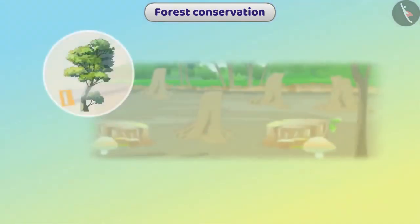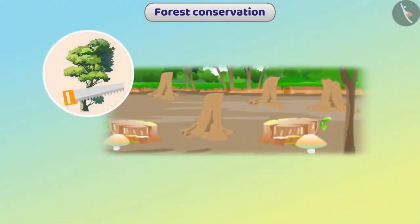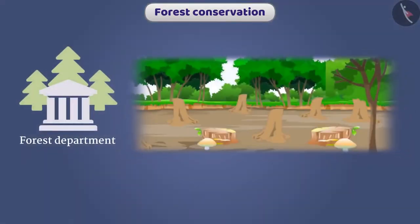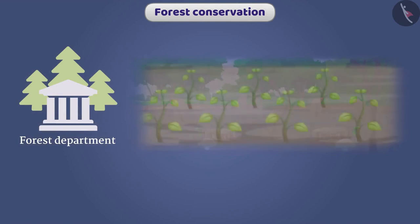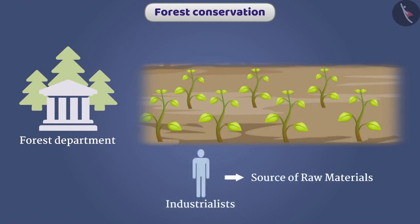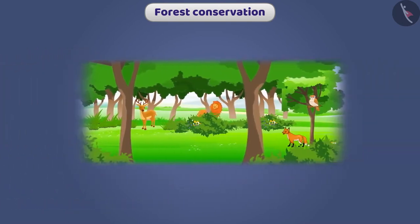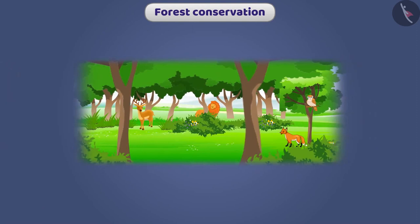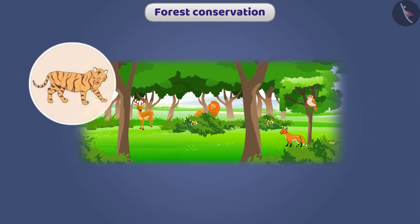The British over-exploited the forests. When control of forests went to the forest department of the government, forest areas were destroyed and the same type of trees were planted on them. This gave industrialists a source of raw materials and revenue to the forest department, but biodiversity was destroyed on a large scale, and various species became extinct or are on the verge of extinction.